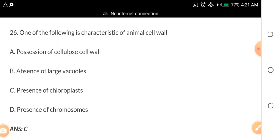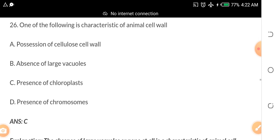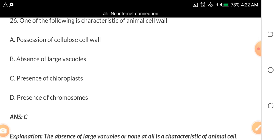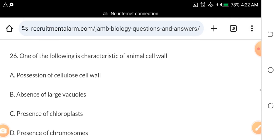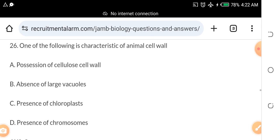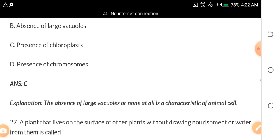Which of the following is characteristic of animal cell? A. possession of cellulose cell wall B. absence of large vacuoles C. presence of chloroplast D. presence of chromosomes. One of the following is a characteristic of animal cell. The answer is absence of large vacuoles or none at all is a characteristic of animal cell.